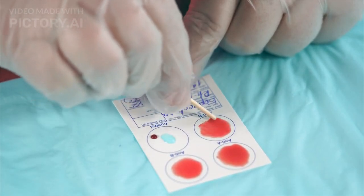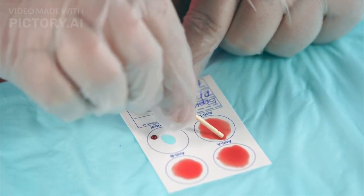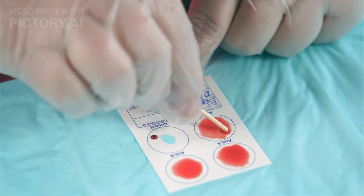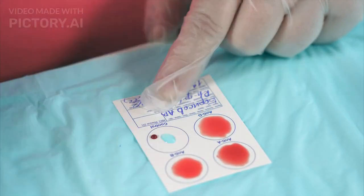2. Agglutination: Insoluble antigens like bacteria clump together when exposed to their specific antibodies.